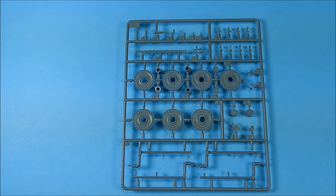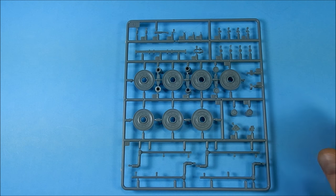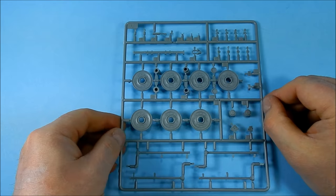Next sprue is C sprue. You get four of these. These are the road wheels, torsion bar swing arms, some hubs, track hangers, clevises, and a few other minor parts.